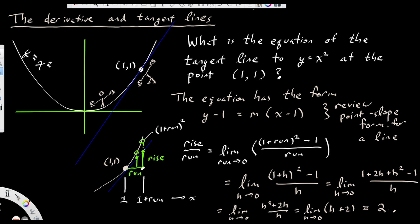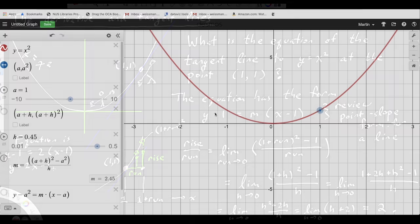So the equation of this blue tangent line is y minus 1 equals 2 times (x minus 1), where 2 is the slope. If we simplify by adding 1 to both sides, it becomes y equals 2x minus 2 plus 1, which is y equals 2x minus 1. My artistic skills might not have been up to the job of explaining the relationship between the slope of the tangent line and this funny-looking limit, so I've decided to show this also in Desmos.